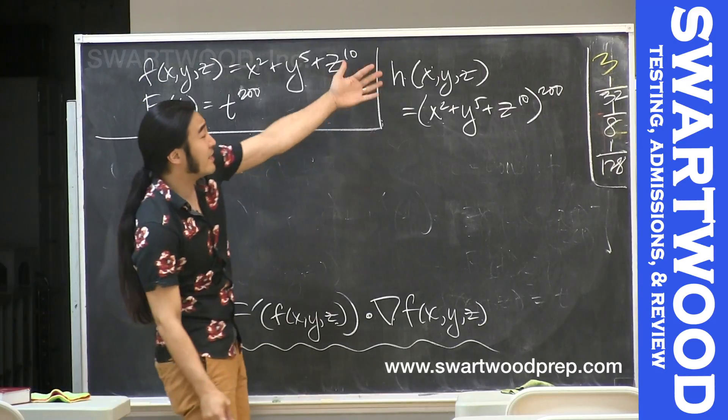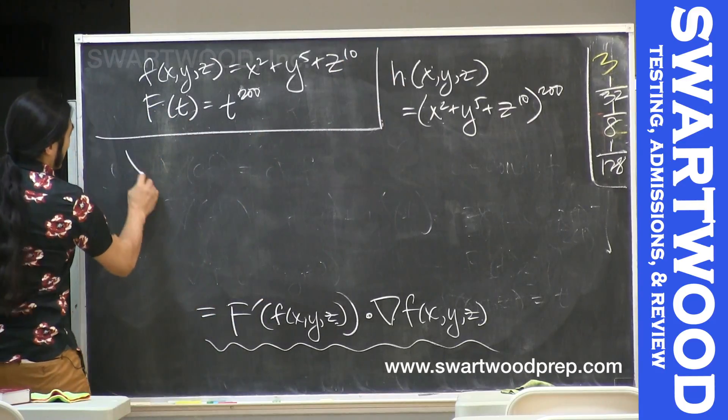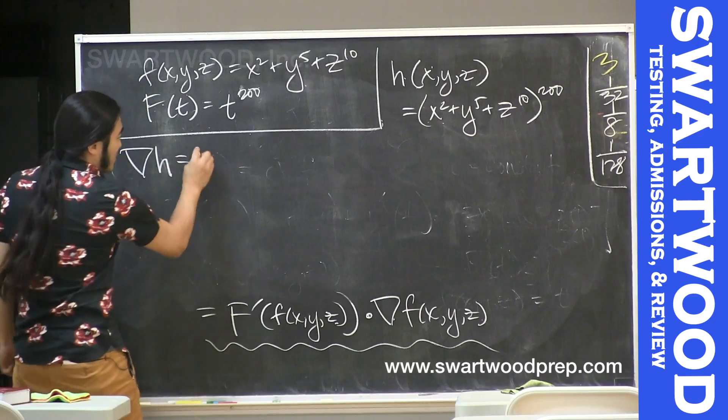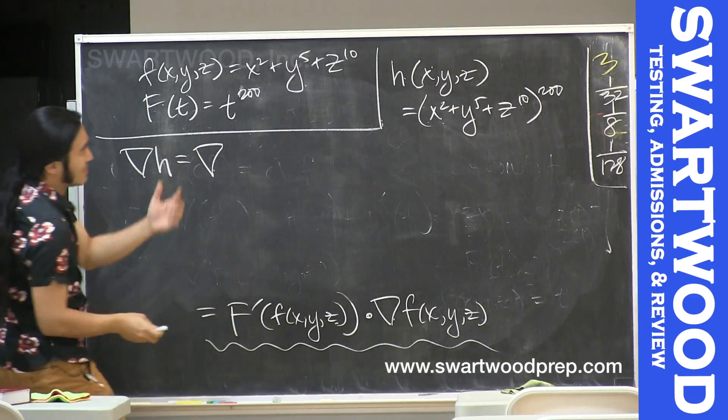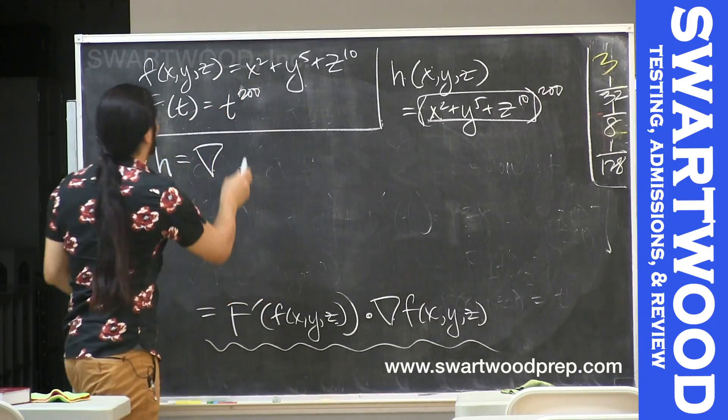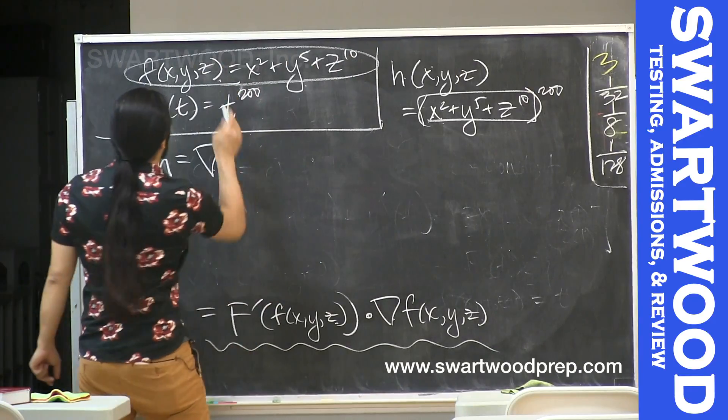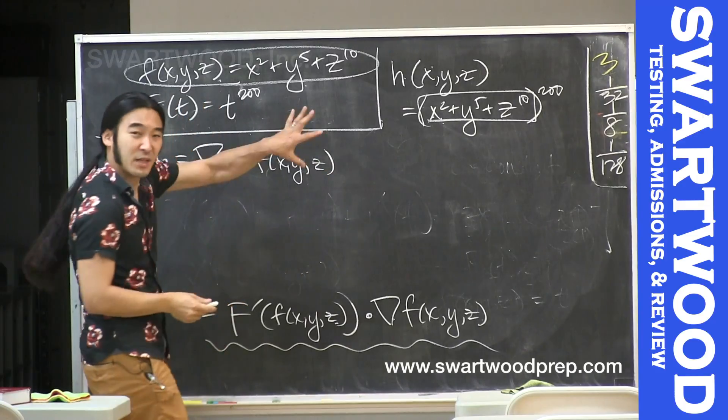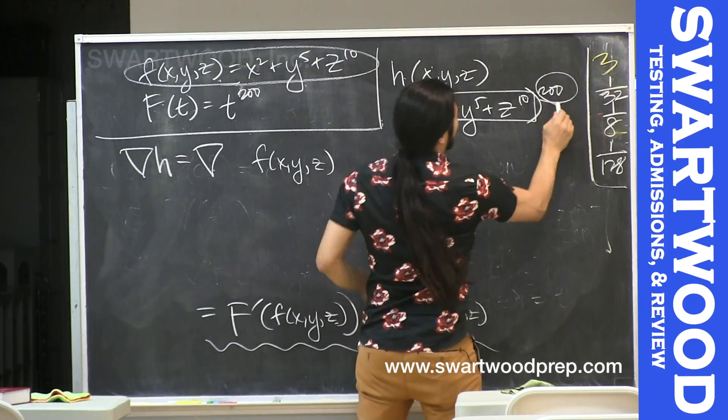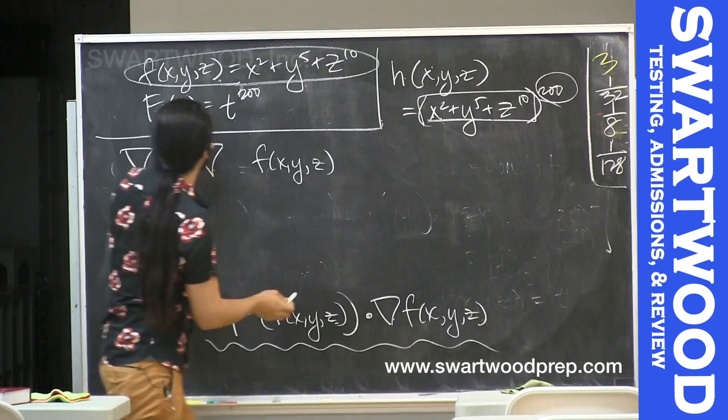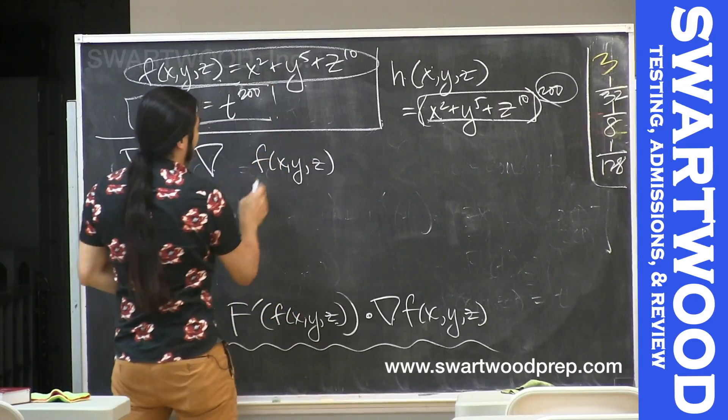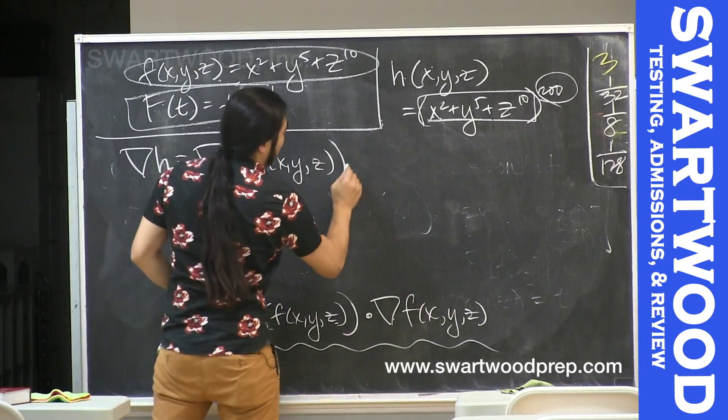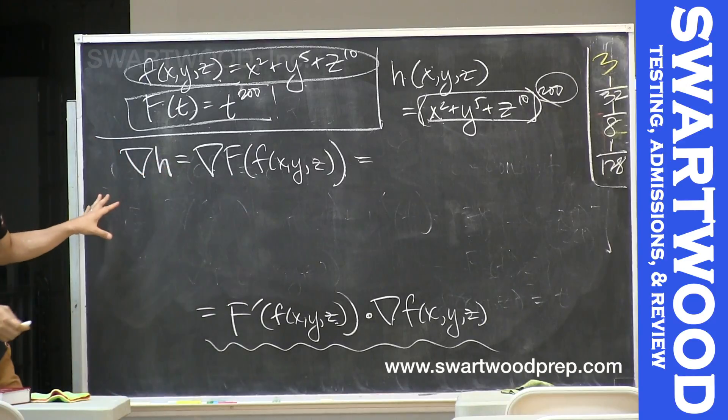So let's look at h(x,y,z), defined by x squared plus y to the fifth plus z to the tenth all raised to the 200th power. So what we want is we want the gradient of h. First we observe that the gradient of h is going to be what? Well, it's the inside guy, which is our function here, plugged into this outside guy, which is something to the 200th power, and that's definitely going to be our big function. So this is the format we're looking for.